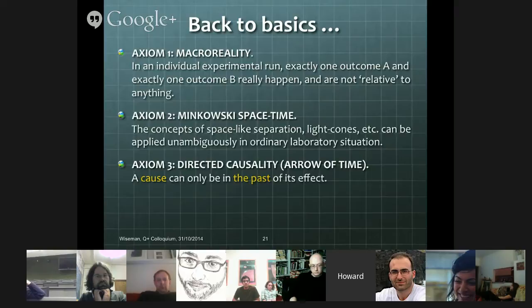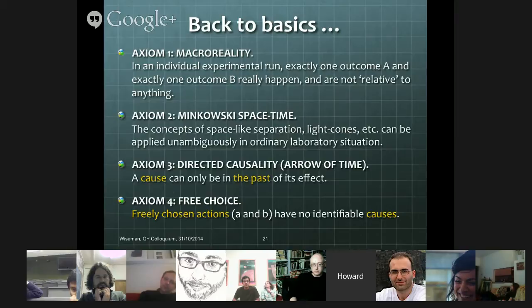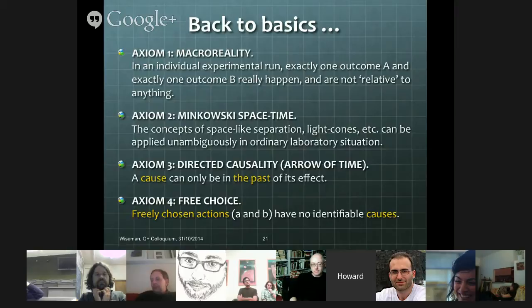I've highlighted some things as undefined terms because at this point I'm not saying what a cause is, and I'm not saying what the past is, but there are going to be other axioms that use the same terms, and when we put them together, meaning will emerge from these principles. Axiom four: free choice — freely chosen actions, which in the context of the Bell experiment are the measurement settings little a and little b — have no identifiable causes. So free choices have no causes. That's the axiom.